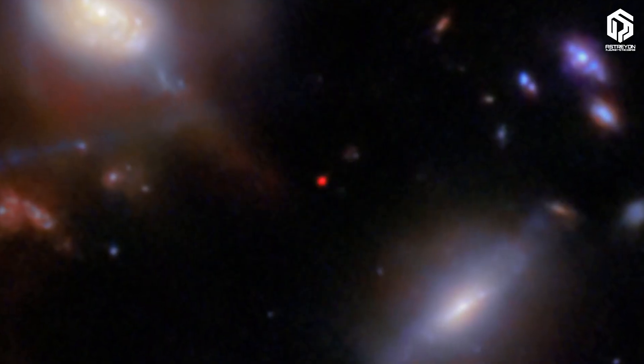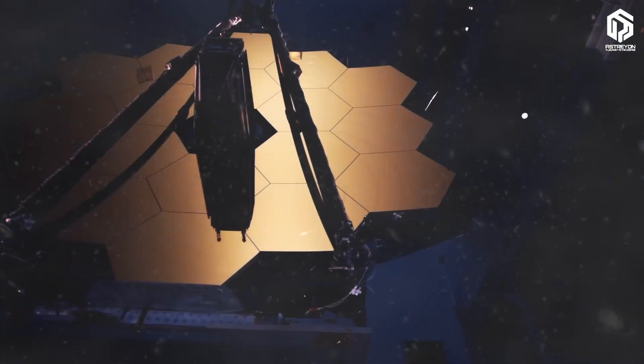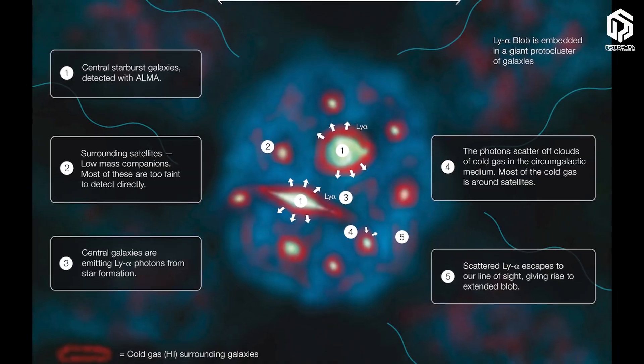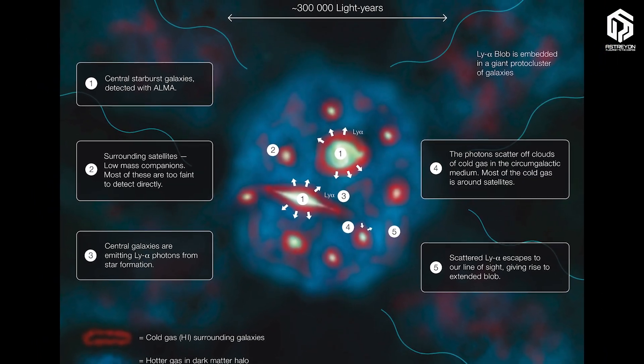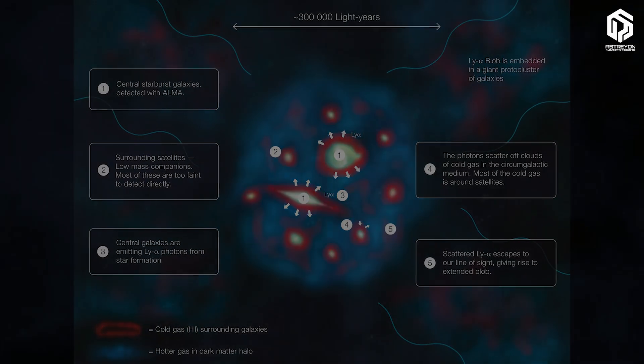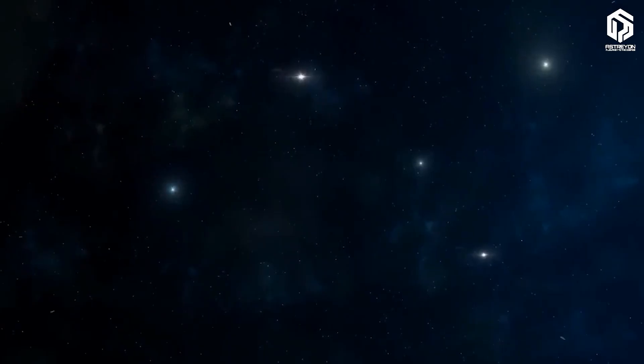This discovery is a real surprise. JWST saw strong Lyman-alpha emission from hydrogen in it, a light that should have been absorbed by the neutral hydrogen fog of the early universe, but apparently the fog around it was cleared.